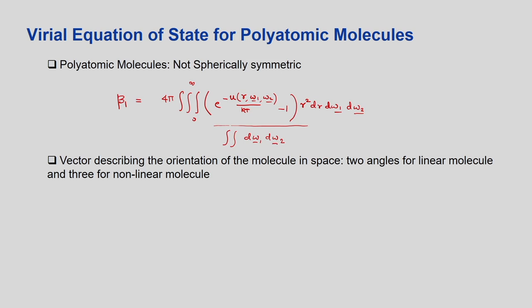The omega vector describes the orientation of the molecule in space. For a linear molecule it requires two angles; for a non-linear molecule it requires three angles. For example, if you have two atoms you describe one atom's orientation relative to the other, and for a third atom you also need a dihedral angle to fix the atom in space.